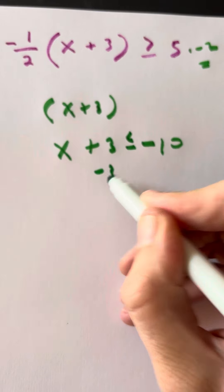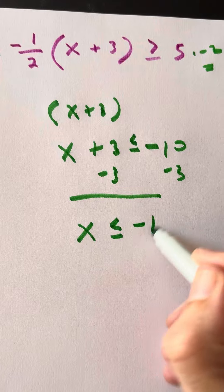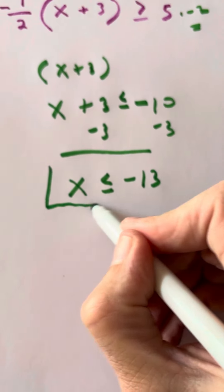Now we're going to subtract both sides by 3. Then we'll have the x isolated, so we have x is less than or equal to negative 13. And that's actually going to be my answer.